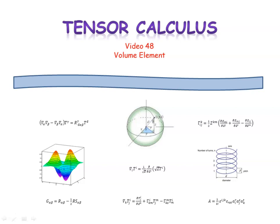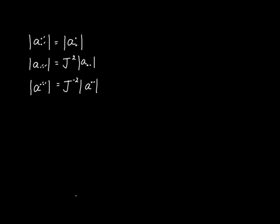We'll also derive an expression for the partial derivative of the volume element with respect to our coordinate value zⁱ. Back in video 46, we derived these relationships. We said that the determinant of a second-ranked mixed tensor is an invariant quantity, or that it is an absolute tensor of rank 0. However, the determinant of a second-ranked tensor with two lower indexes is a relative tensor of weight 2, because of this factor with a positive exponent of 2.